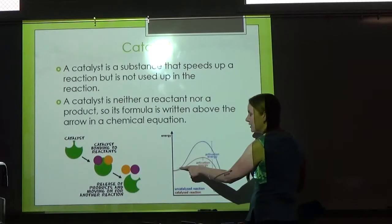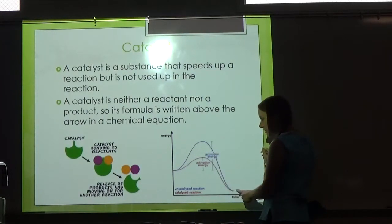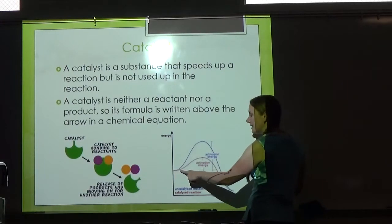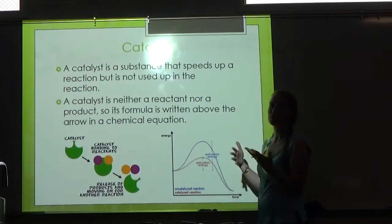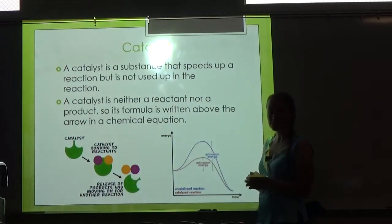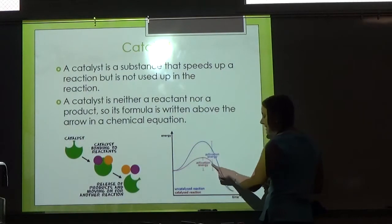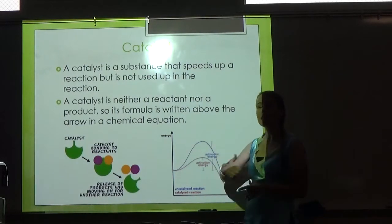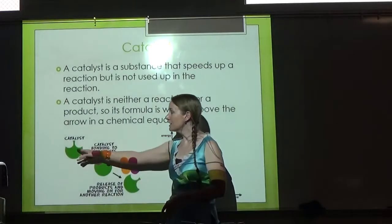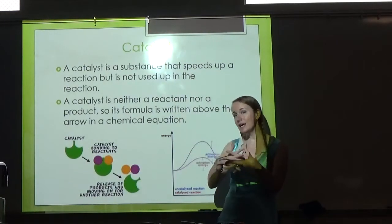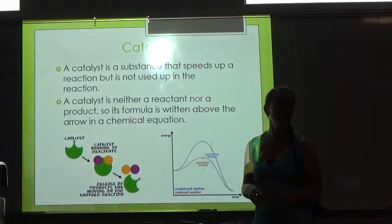Say this is how much energy we normally need to get a reaction going. When we add a catalyst, it provides a different mechanism for the reaction to occur, which requires less activation energy, so that can allow the reaction to happen faster. Sometimes a catalyst also just provides a location for the reactants to react with one another.